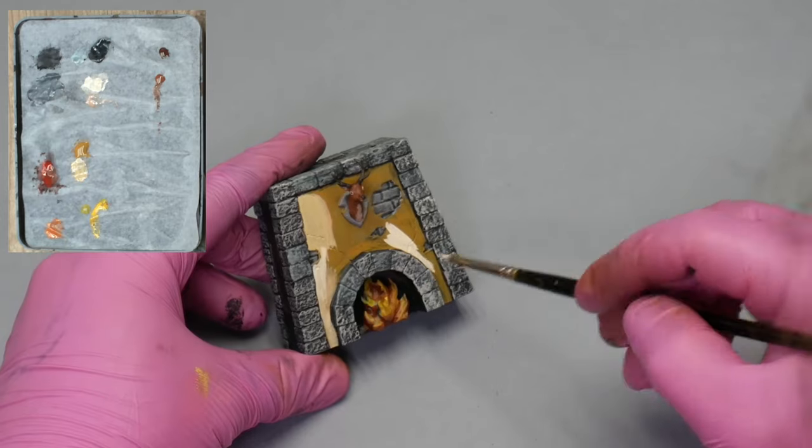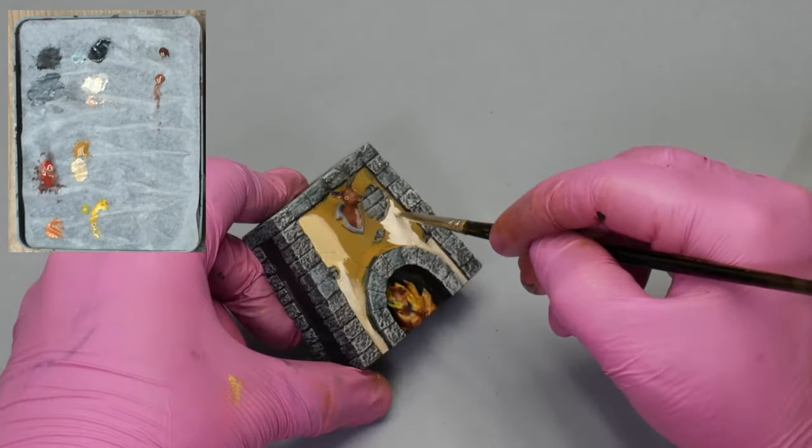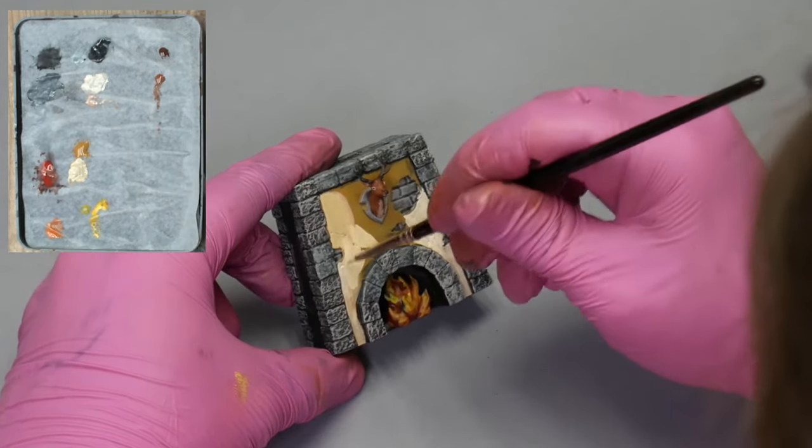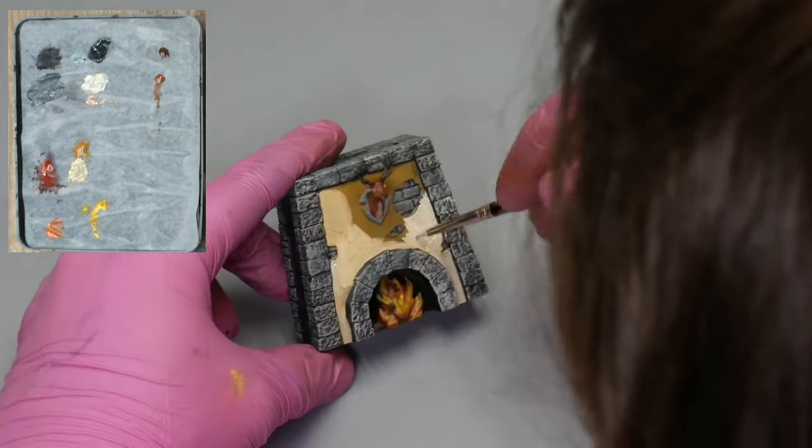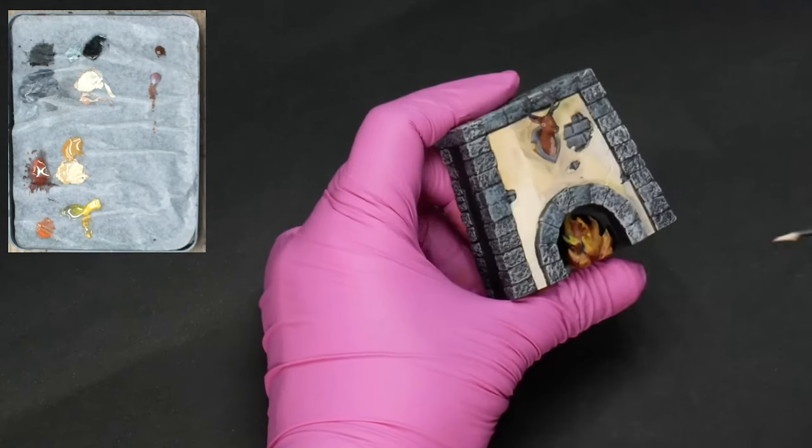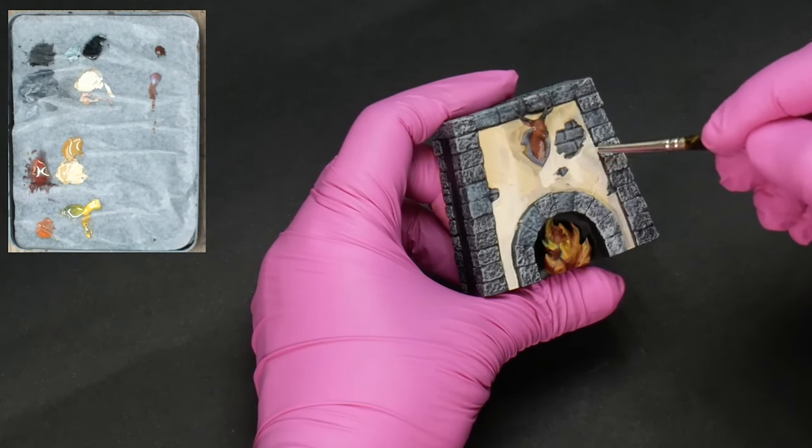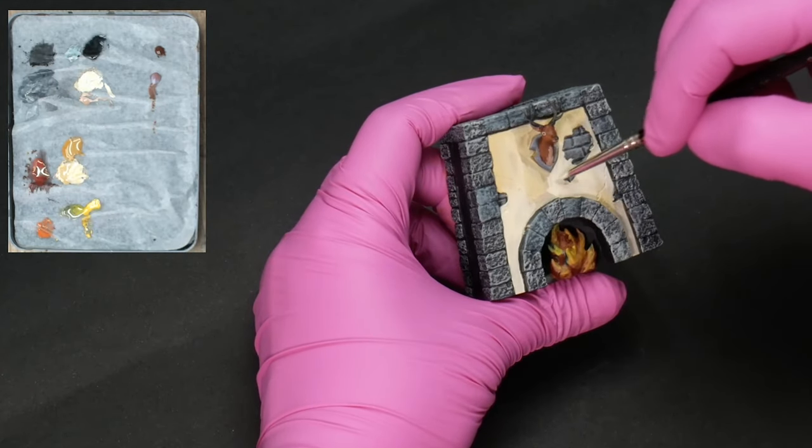I added white to ocher brown, making it a very light beige and I apply it diluted. This color is very diluted because I don't want to cover the ocher completely. This is the second coat.